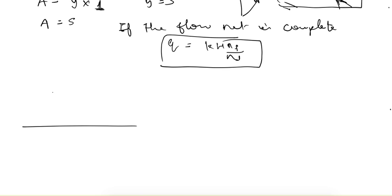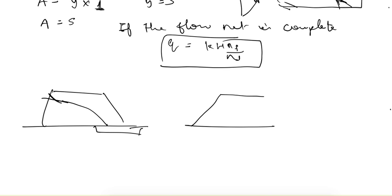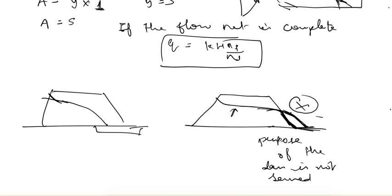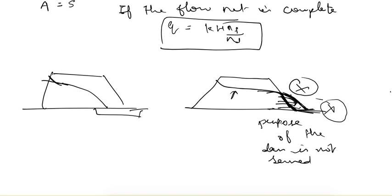What we have described applies when there is a filter on the downstream side, so water flows into the filter. If there is no filter, the top flow line will meet the downstream surface of the dam and follow that surface — it will not go beyond it. If a flow line is drawn crossing the downstream surface, that is incorrect. Once the flow line reaches the downstream face, it follows the profile and does not cross it, because if it did, the purpose of the dam would not be served.